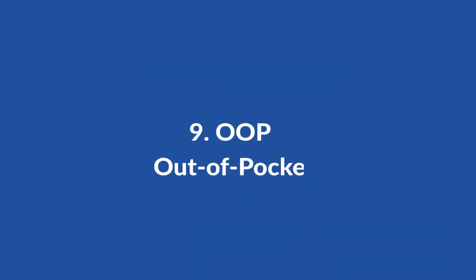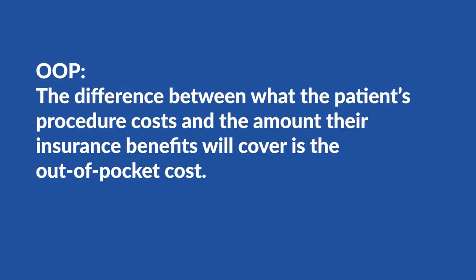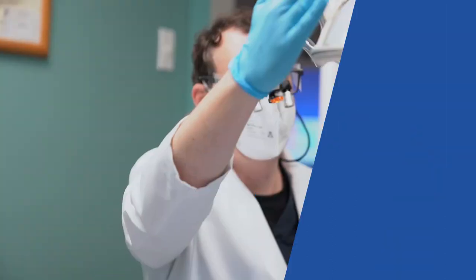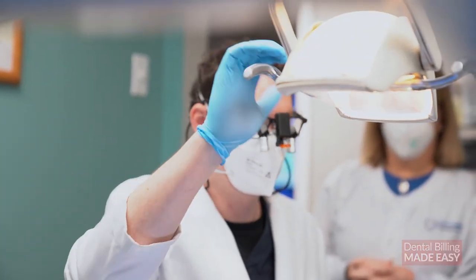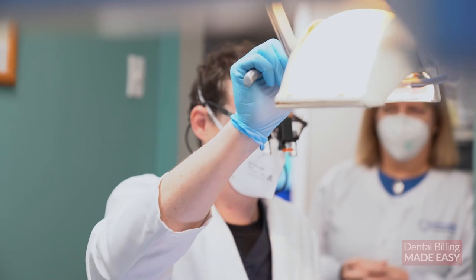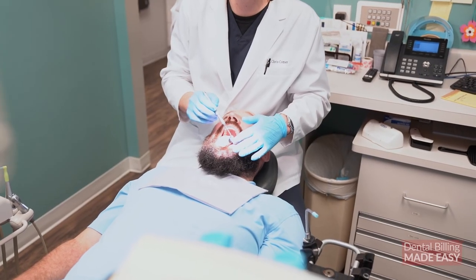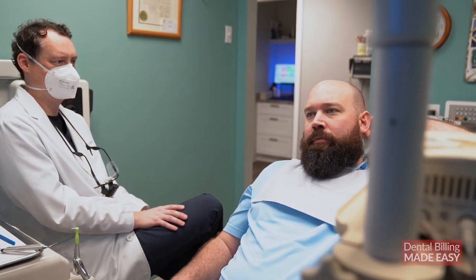Number nine: OOP, Out-of-Pocket. The difference between what the patient's procedure costs and the amount their insurance benefits will cover is the out-of-pocket cost. It's crucial to get this number right in order to communicate an accurate cost to your patient, or else they can be understandably upset about receiving an unexpected bill.